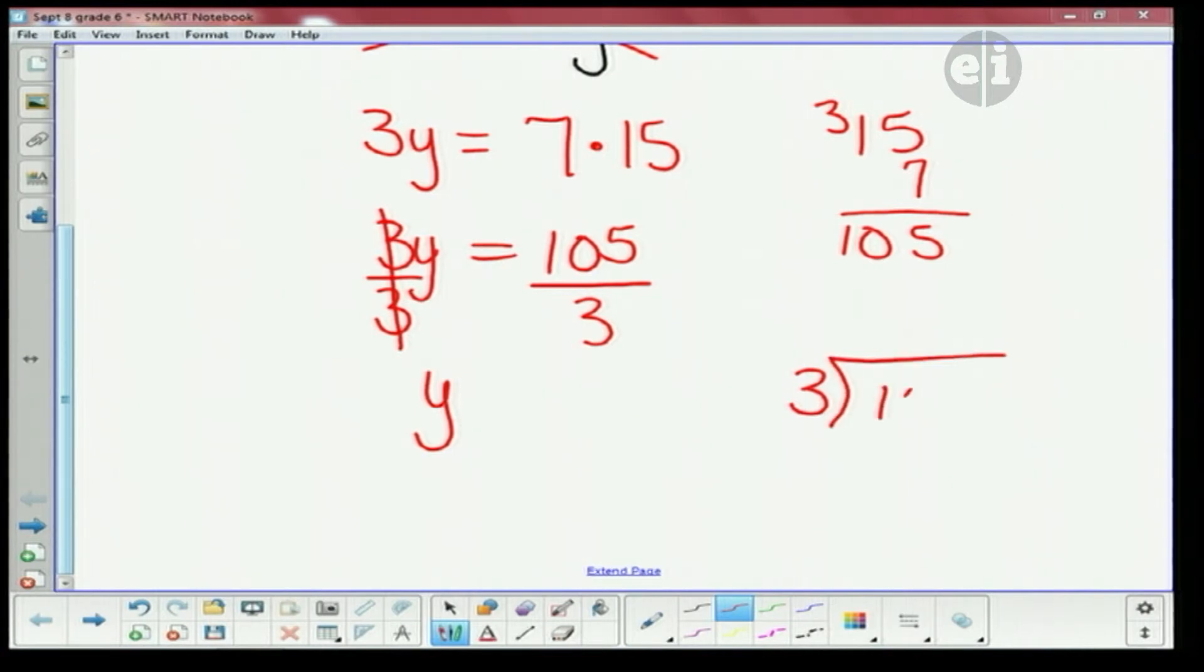Well 3 doesn't go into 1 but it does go into 10, 3 times. 3 times 3 is 9, take them away we end up with 1 and 5. 3 times what is there? 15 and 0.